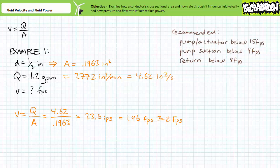Depending upon the application, most manufacturers recommend keeping fluid velocity below 15 feet per second between a pump and an actuator, below 4 feet per second in a pump suction line, and below 8 feet per second in a return line. This explains why suction and return lines are often larger in diameter than working lines — to keep fluid velocity below these figures.